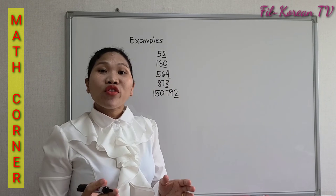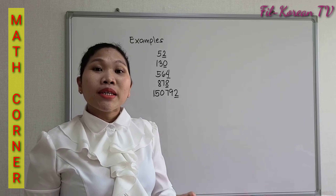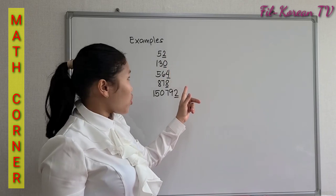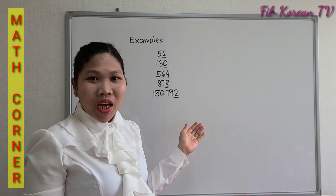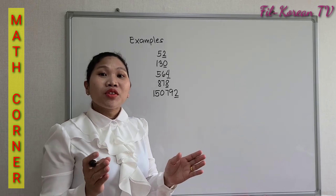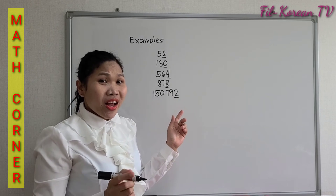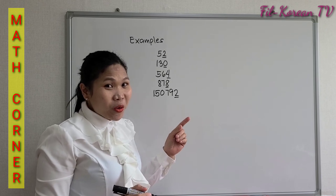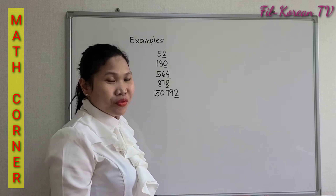As I said, even numbers end in 0, 2, 4, 6, 8. Since these numbers are even numbers, and all even numbers are divisible by 2, that means the answer is exact without a remainder. So by just looking at it, you can tell whether a number is divisible by 2 or not.